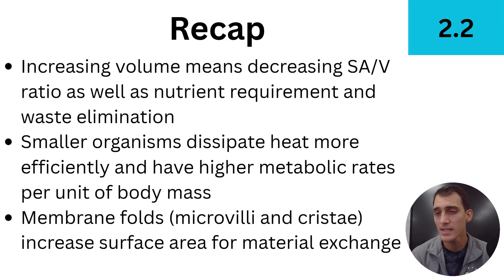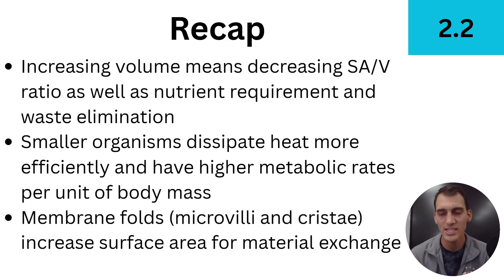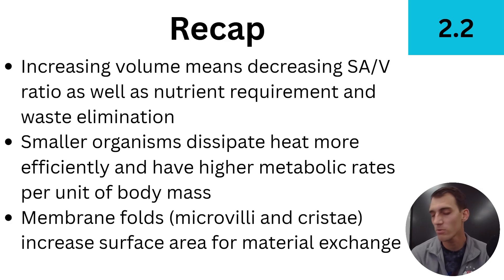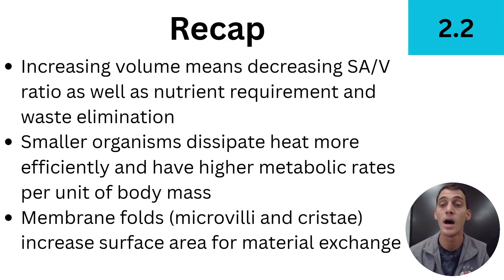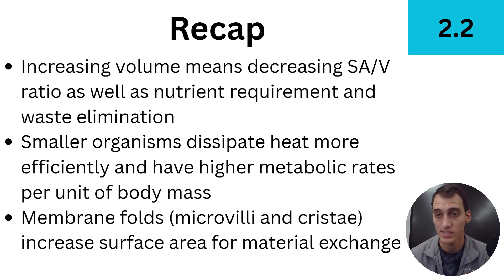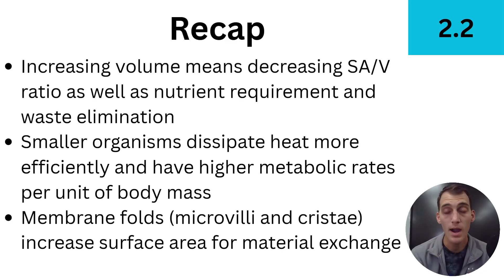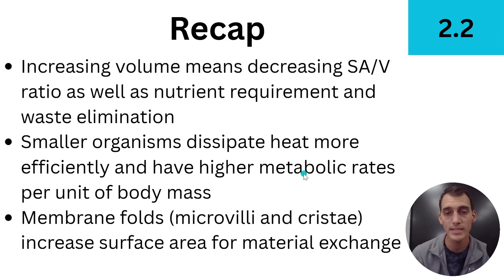Smaller organisms dissipate heat more efficiently and have higher metabolic rates per unit of body mass, making them more efficient with their energy and chemical reactions. Finally, a way that cells can get around the surface area to volume size relationship is through membrane folds — including structures such as microvilli and the cristae folded inside the mitochondrion — which all increase surface area for material exchange, and that ends up being very important for several cell functions. That wraps it up for this topic. Let me know if you have any questions and we'll see you next time.